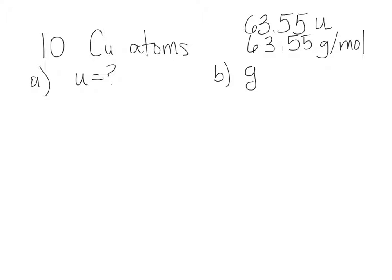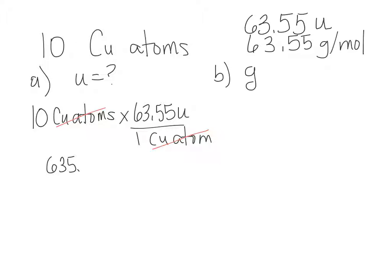So if I've got 10 copper atoms, and the mass is 63.55 atomic mass units for one copper atom, then 10 copper atoms have a mass of 635.5 atomic mass units. If one of them weighs 5, 10 of them will weigh 50.